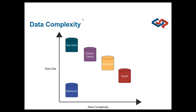NoSQL databases are about two different things. There's a tradeoff: we have data size, which key-value stores handle very well, versus data complexity. Key-value stores handle big data sets and are incredibly scalable, whereas graph databases handle more complicated data but don't scale as well as key-value stores.